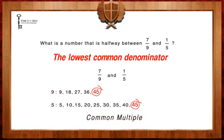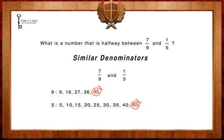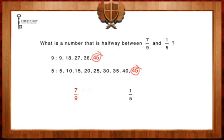In order to have similar denominators, we must multiply our fraction of seven ninths by five on the top and bottom. We are left with the fraction of 35 over 45. Next, we must multiply our fraction of one-fifth by nine on the top and bottom. We are left with a fraction of 9 over 45.